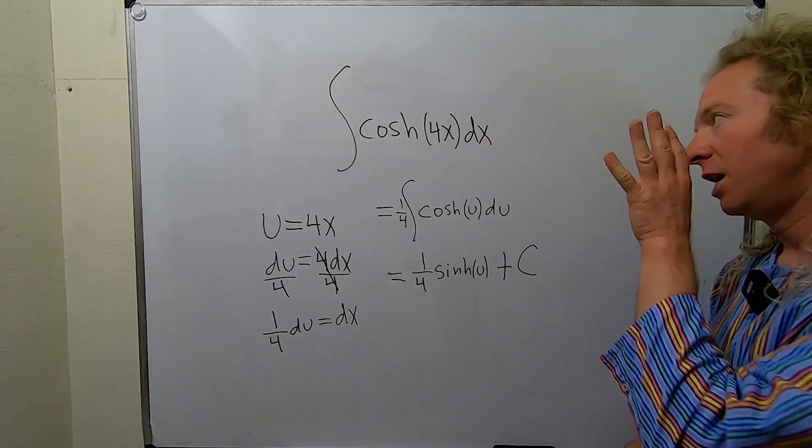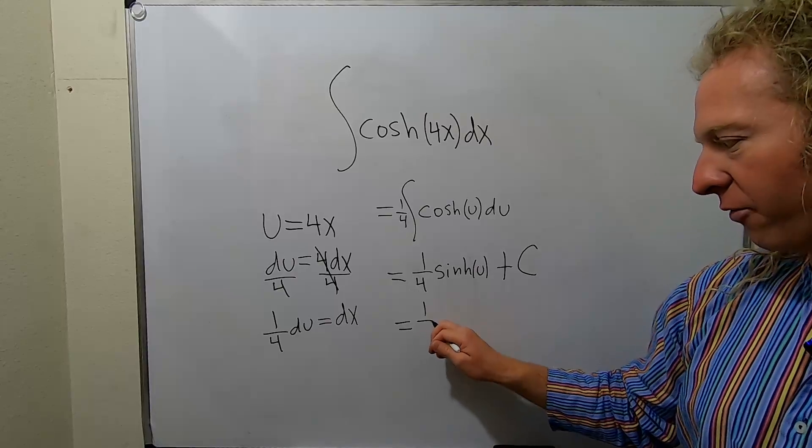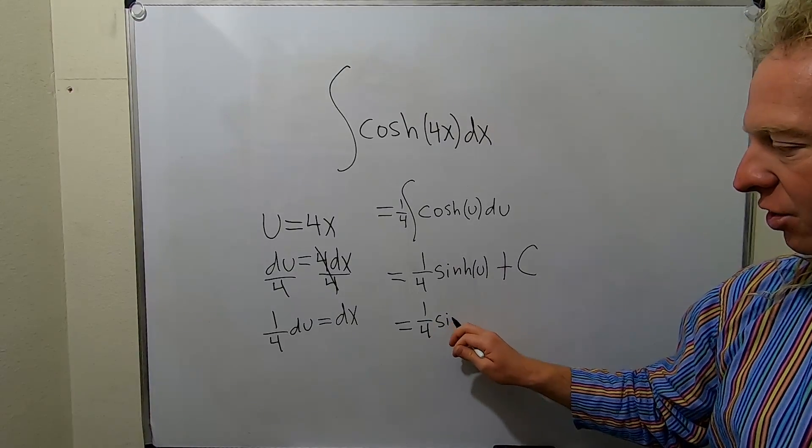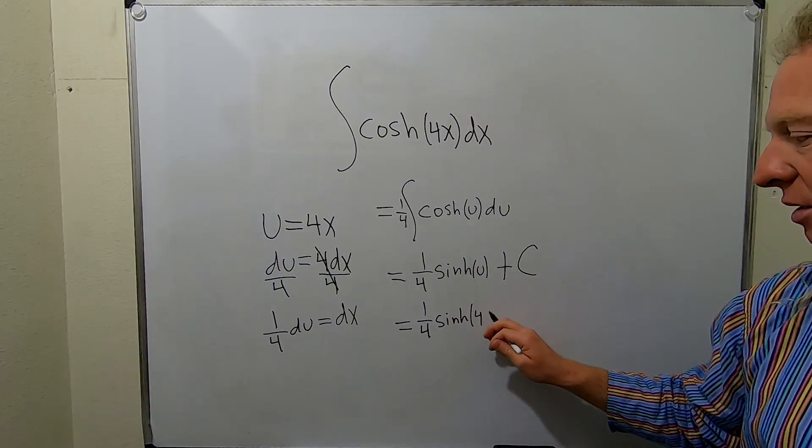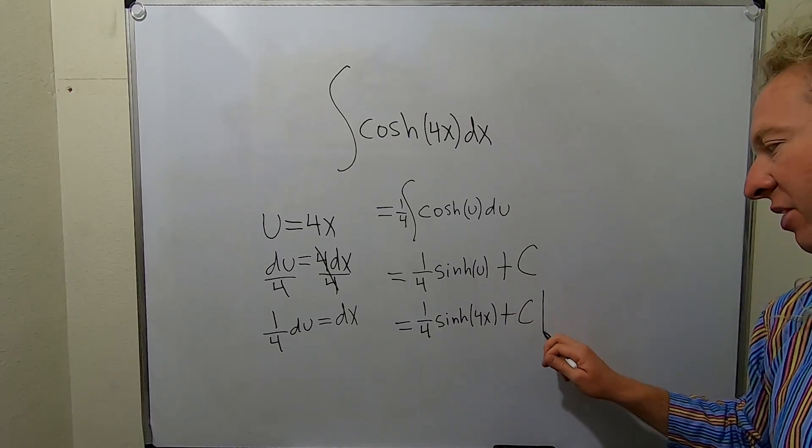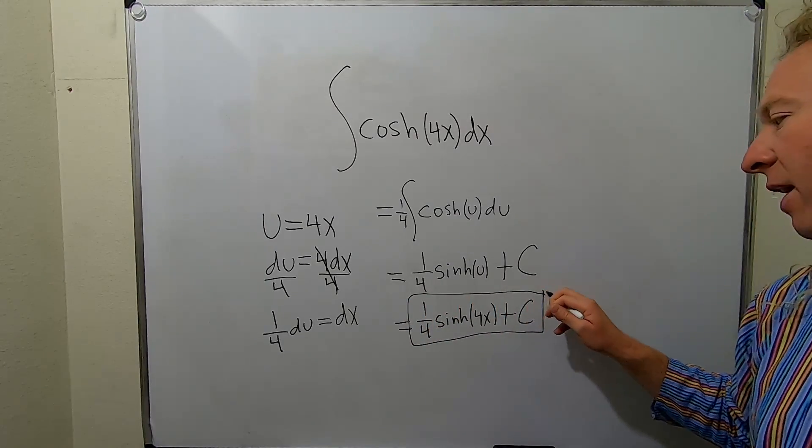The last thing to do is replace u with 4x. This is equal to 1/4 sinh of 4x plus our constant capital C. And that would be the final answer.